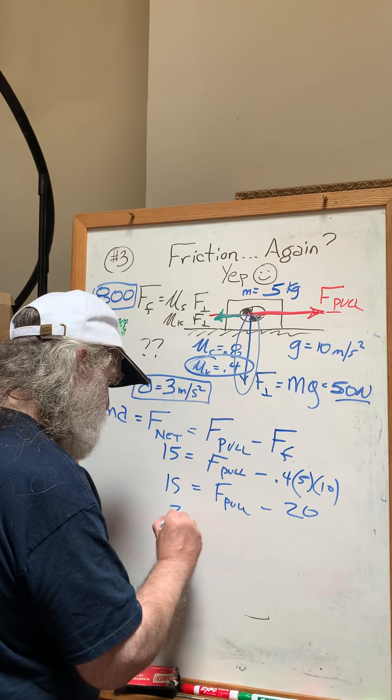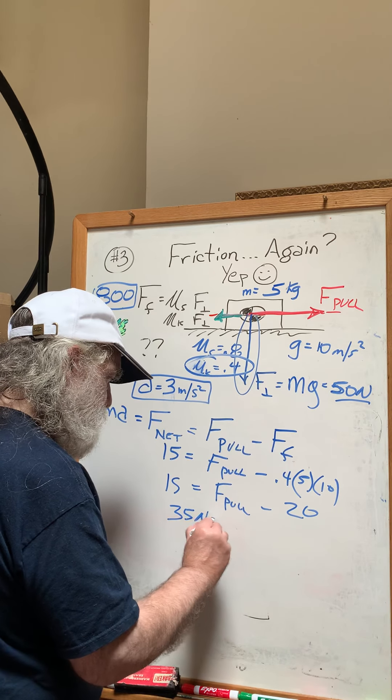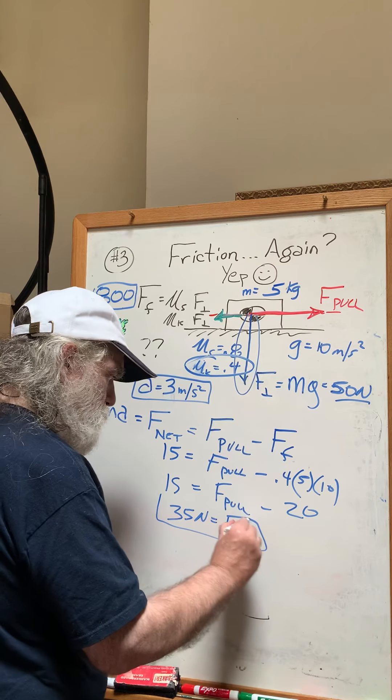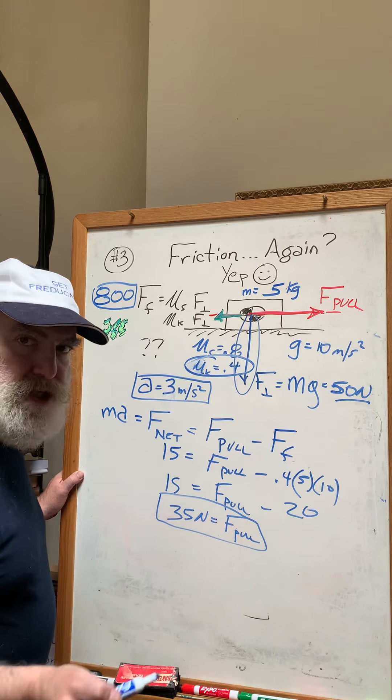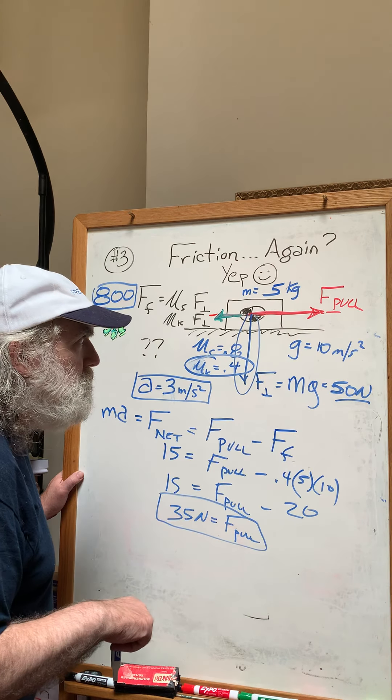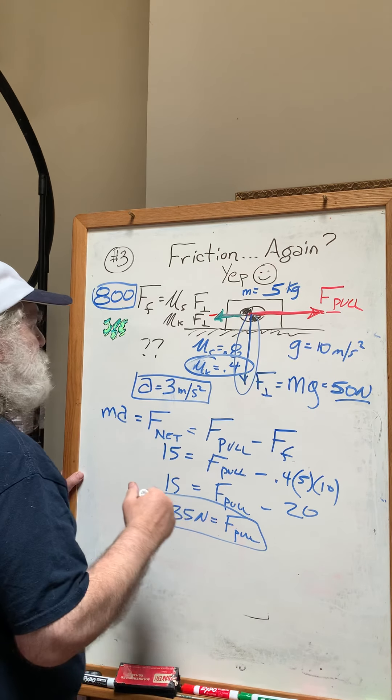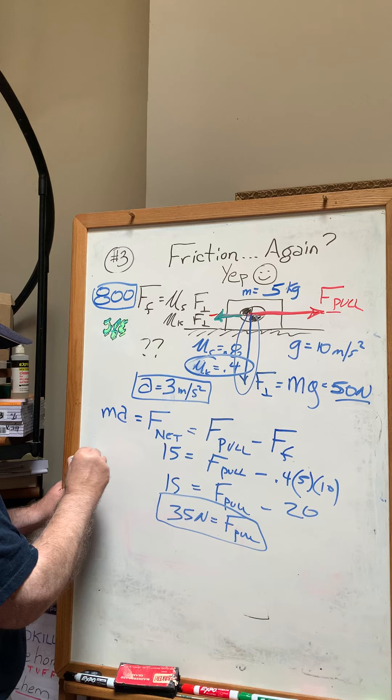That gives us 35 newtons equals F pull. By the way, what force was needed to move the box? Well, to get the box moving you need a static coefficient of friction, that's 0.8.